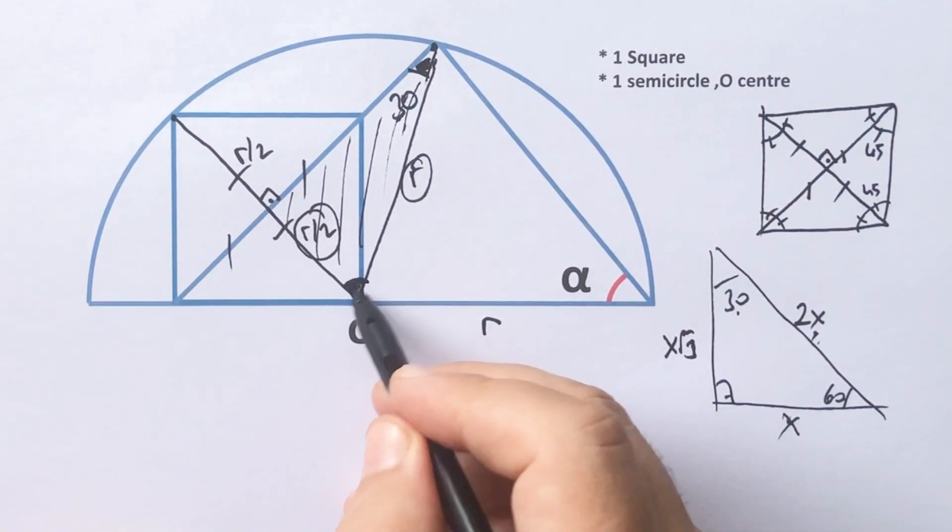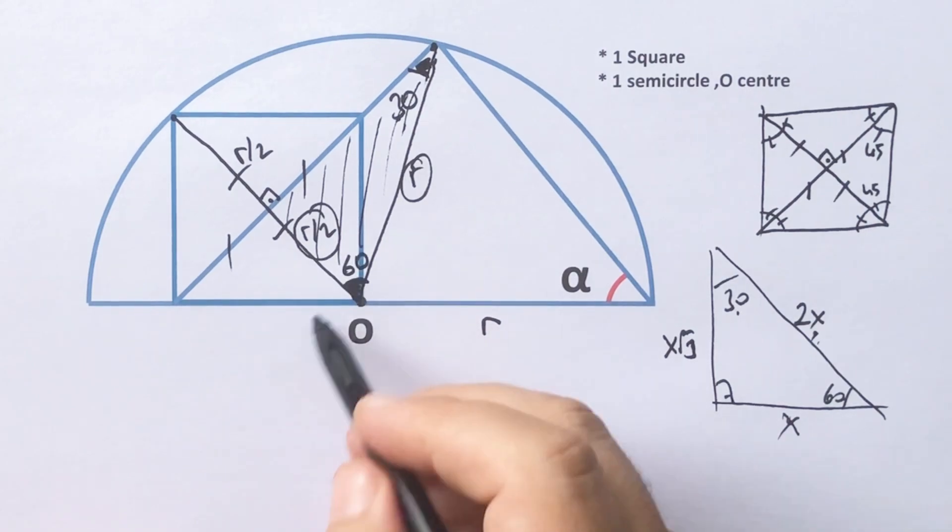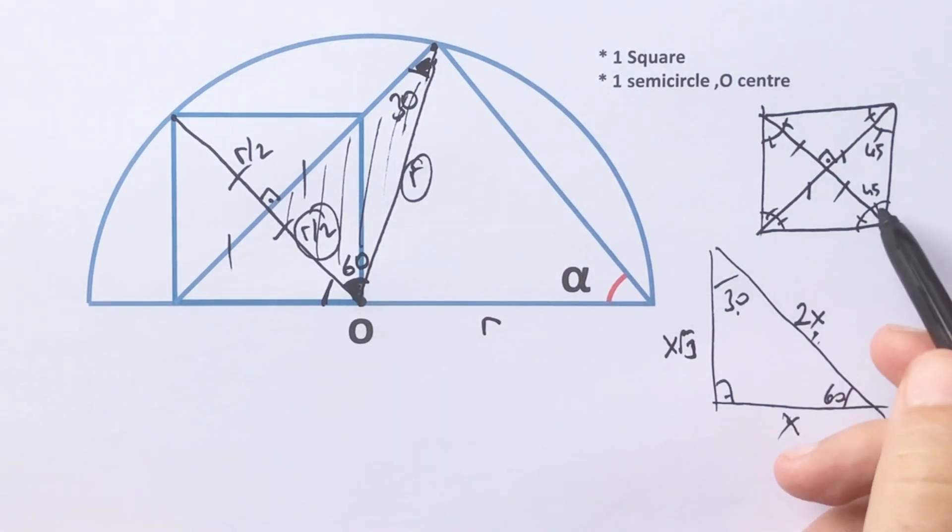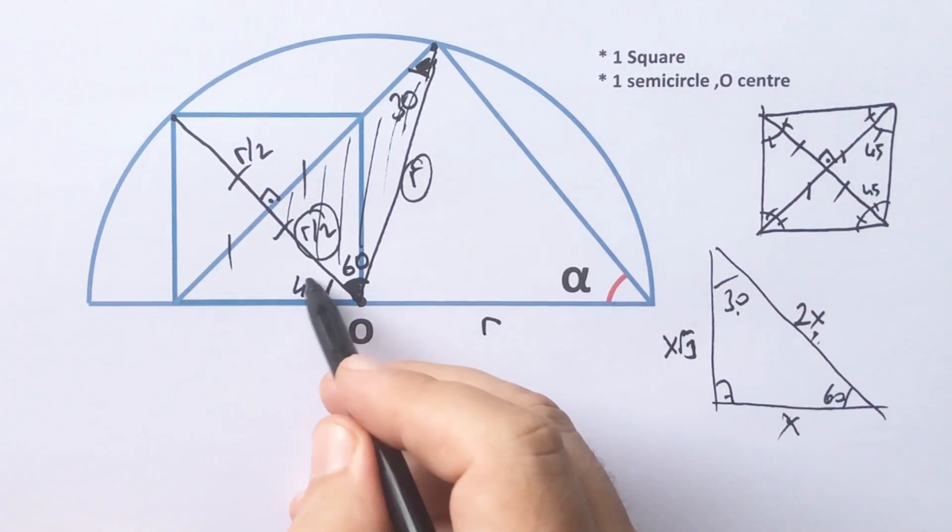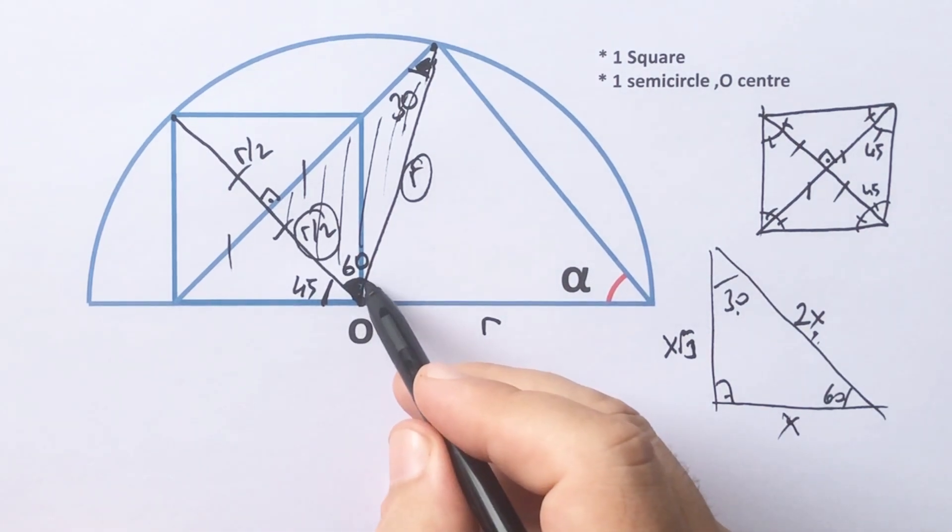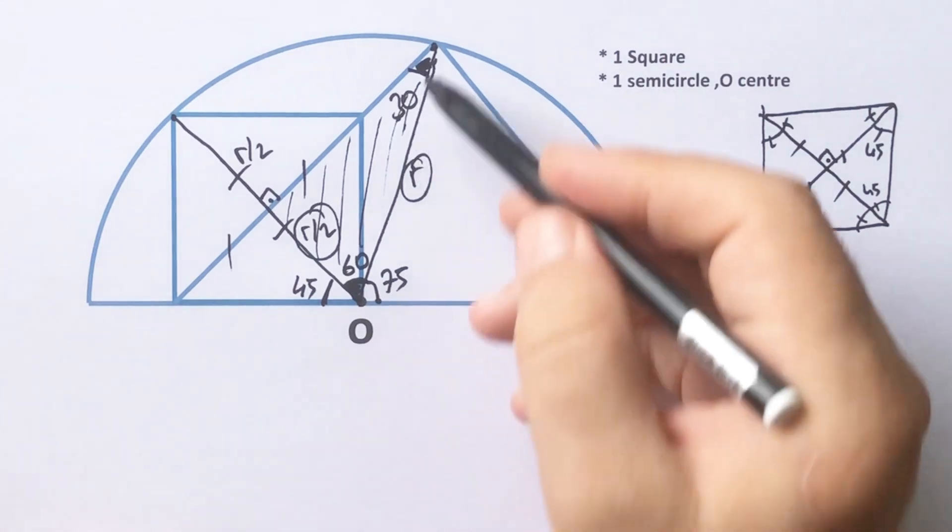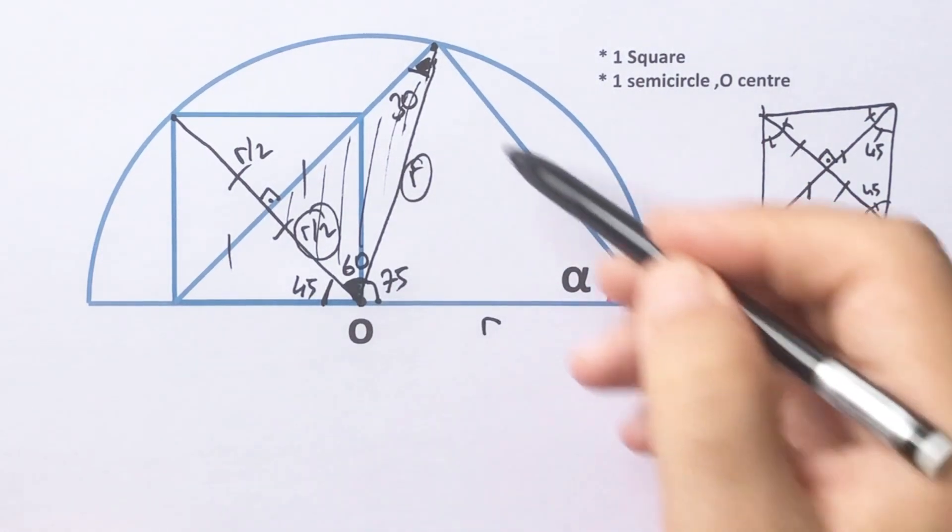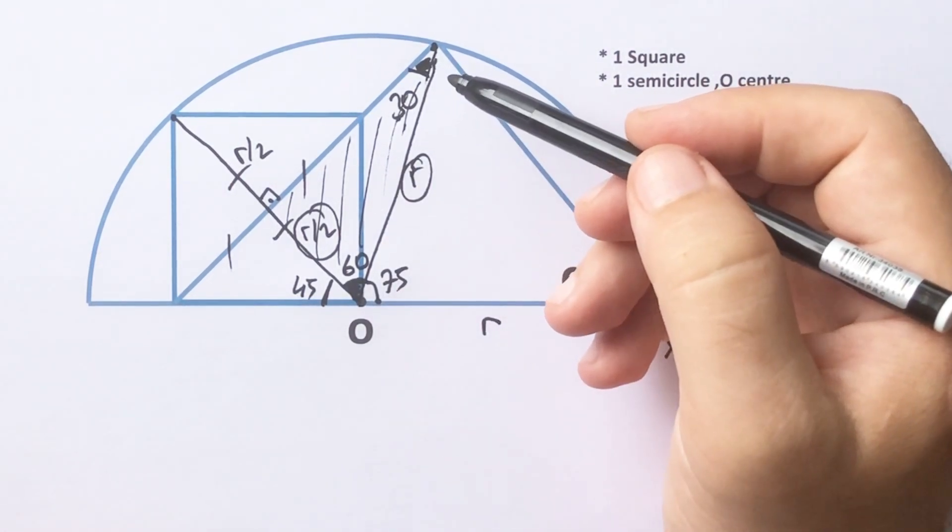And then here must be 60 degrees, and this angle must be 45 degrees, right, because of the square. And then 75 degrees left here. Notice that this triangle is an isosceles triangle.